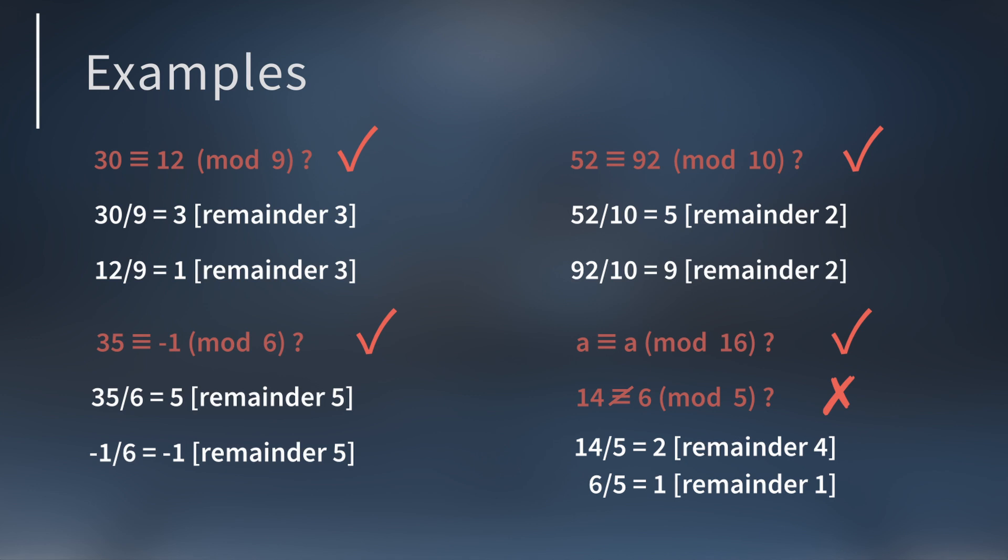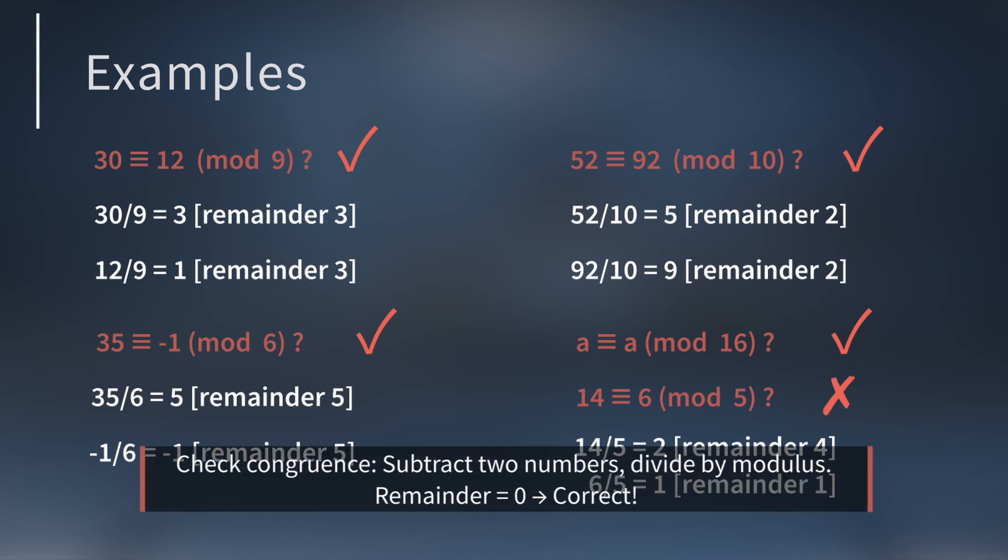There's a useful trick to check if two numbers are congruent. Above, we did several divisions to see if each congruence was correct or not. We divided both sides by the modulus and checked if the remainders were the same. Another way you can check is by subtracting the two numbers, the order doesn't matter, then divide by the modulus. If the remainder is 0, then the congruence is correct.